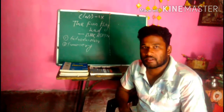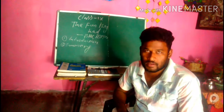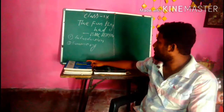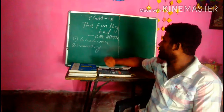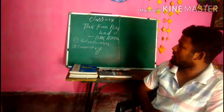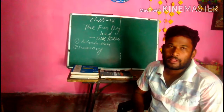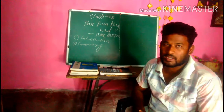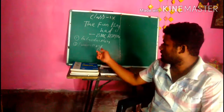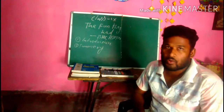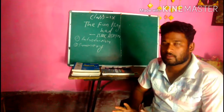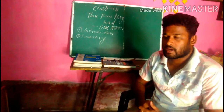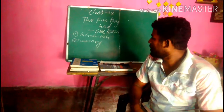Good morning, children. This is our first class on literature for class 9. The first chapter we have is 'The Fun They Had' by Isaac Asimov. The fun they had — what type of fun and who had it? I will discuss it in the summary. Today we will cover the introduction of this chapter and its summary.